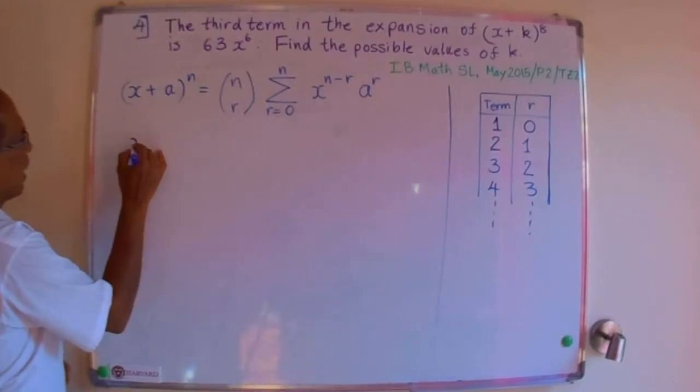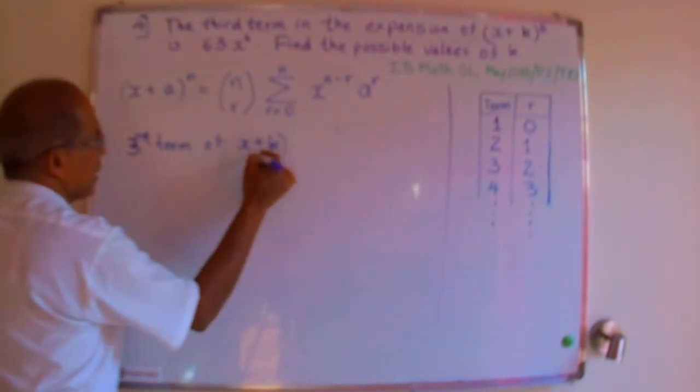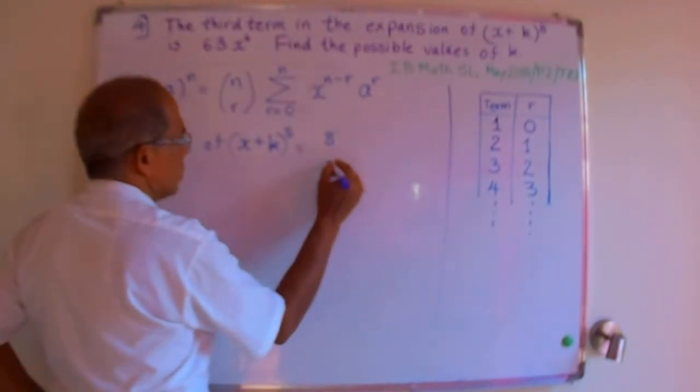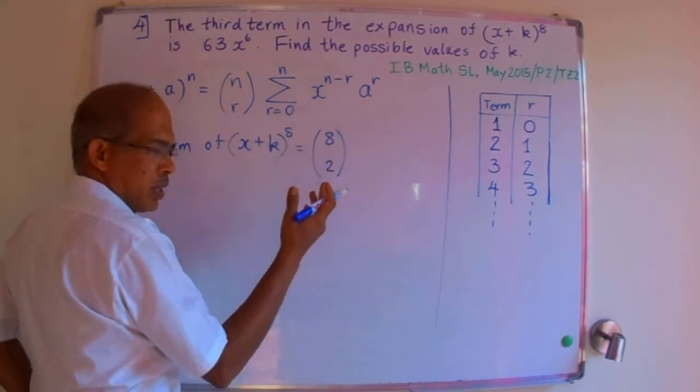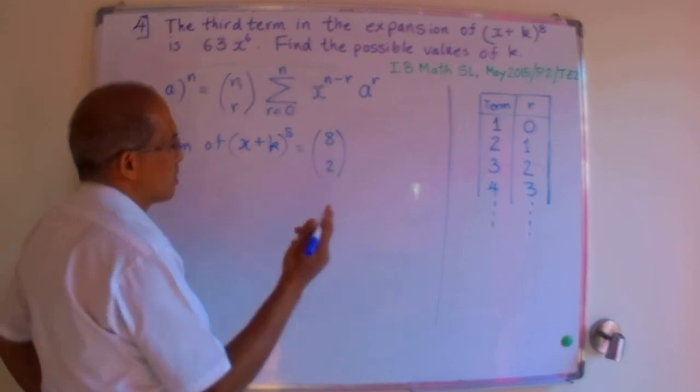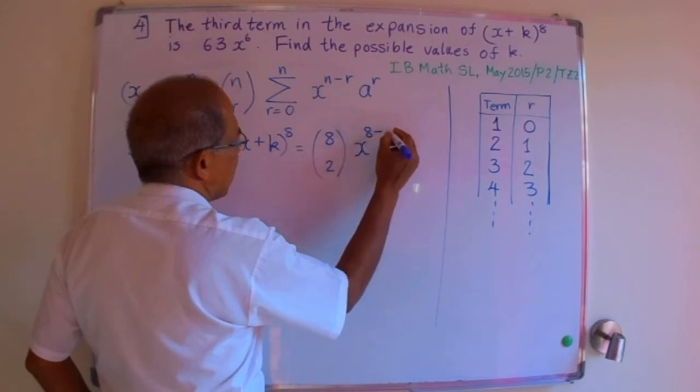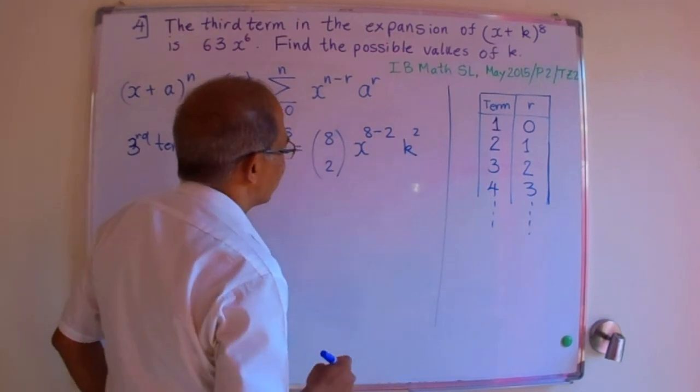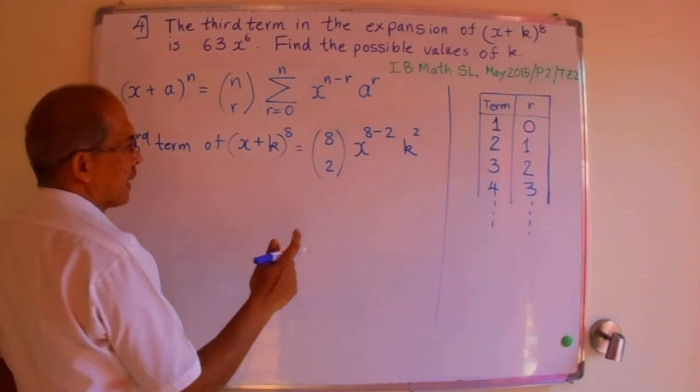So we have the third term of x plus k to the power 8 being 8 choose 2, and it's a summation, but we are taking just one of those terms now, which is the third term, x to the power 8 minus 2 and k to the power 2. But the problem tells us that this is equal to 63 x to the power 6.